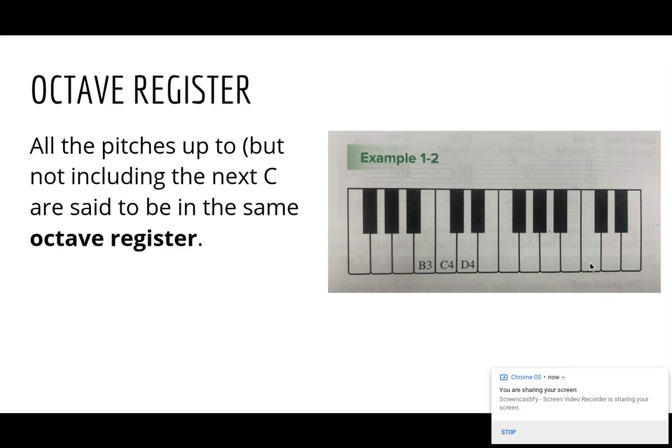So if this is C5, what would this note be? Hopefully you said D5, right? Because we're going in alphabetical order, and we are now into fives once we got to this C with C5, D5, E5. So the same thing going in the reverse direction, we have C4. So before that would be B3. Hopefully you said A3, then we would have G3, F3.